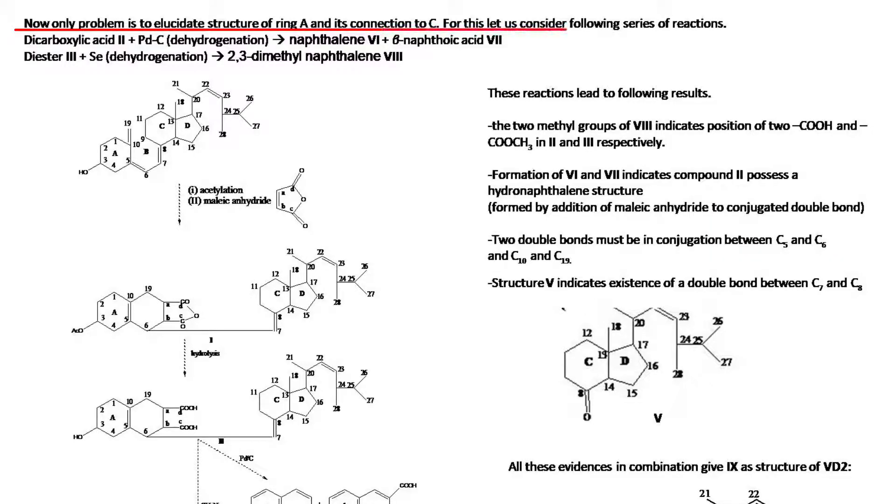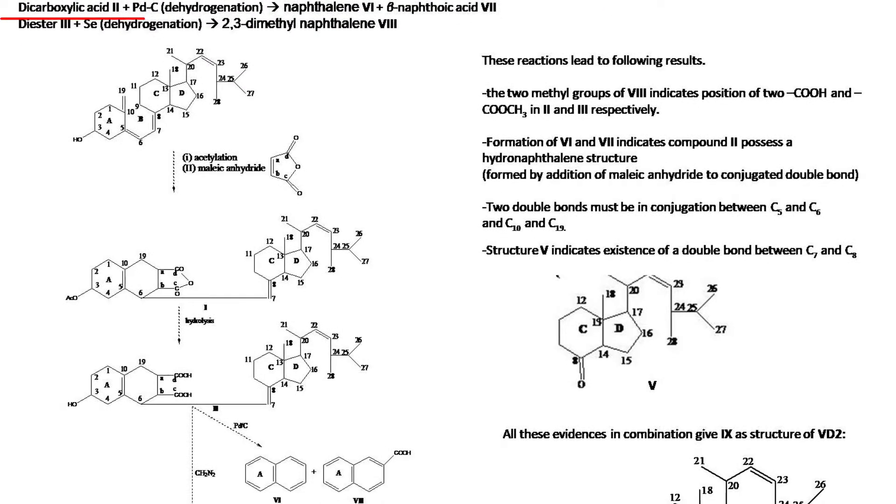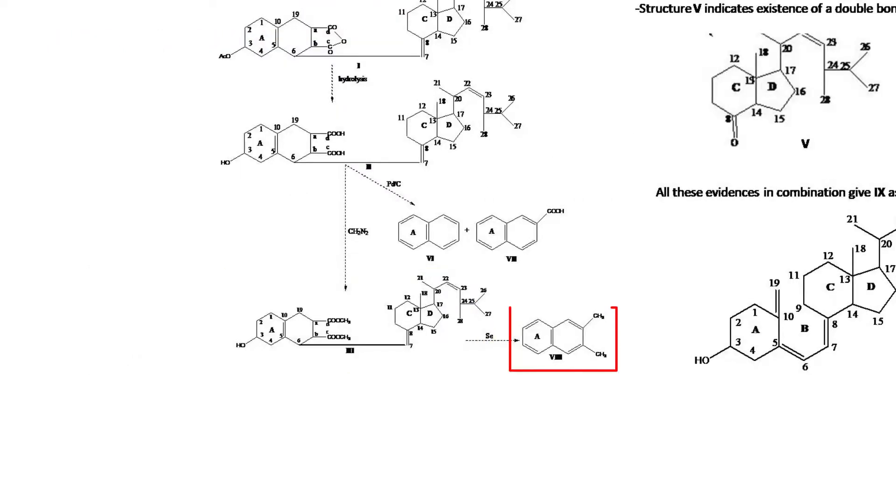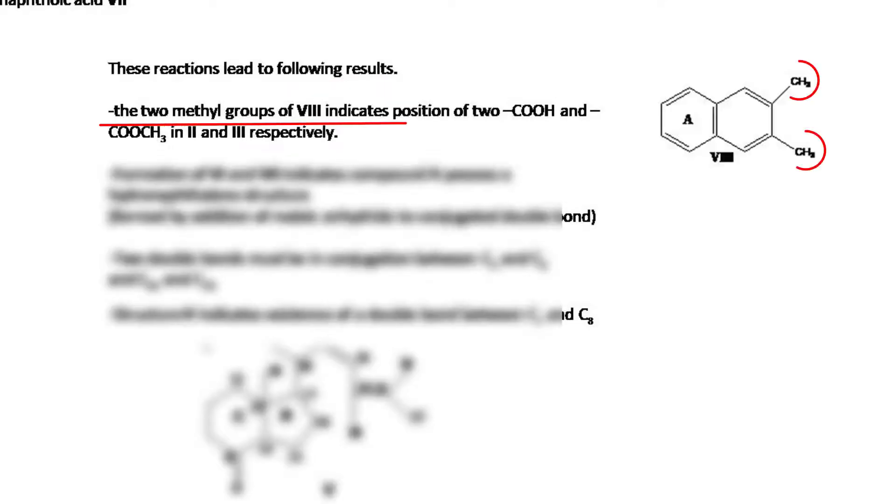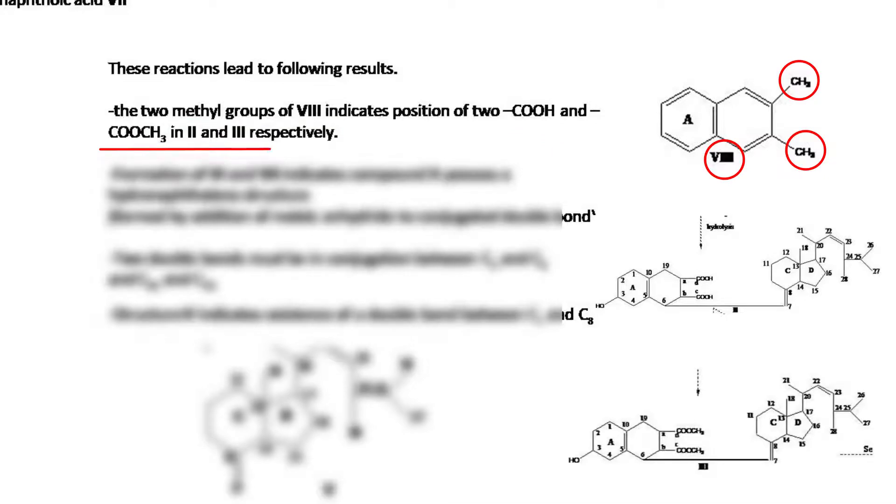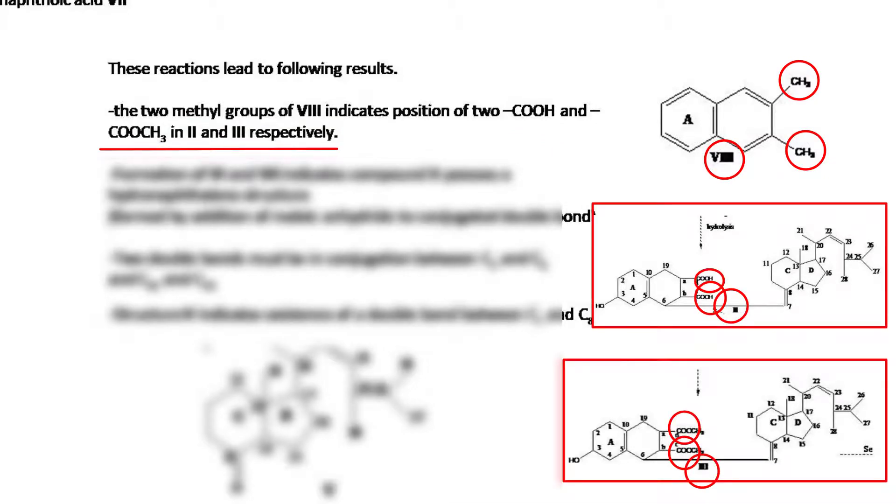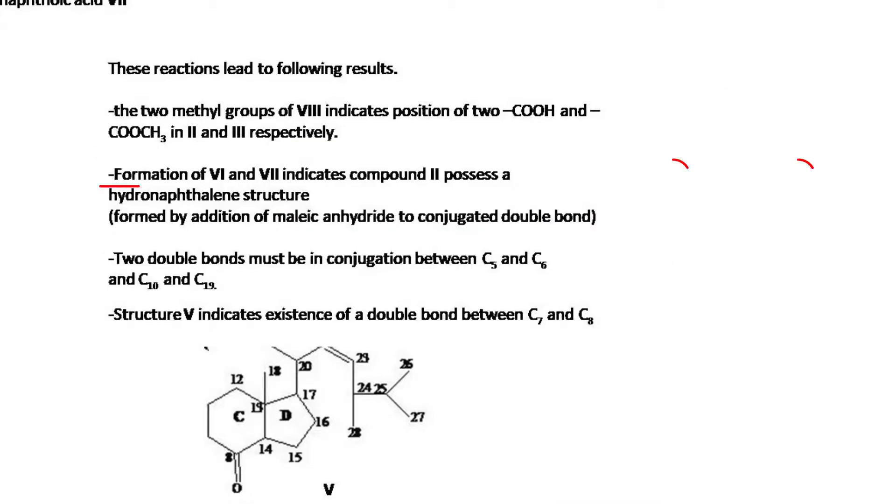Now the problem is to create the structure of ring A and its connection to C. For this, consider the following series of reactions: Dicarboxylic acid (second) on treatment with palladium-carbon dehydrogenation gives naphthalene (sixth) and beta-naphthoic acid (seventh). Diester (third) on treatment with selenium dehydrogenation gives 2,3-dimethyl naphthoic acid. These reactions lead to the following results: the two methyl groups indicate positions of 2-OH and 3-OCO-CH3 in second and third respectively.